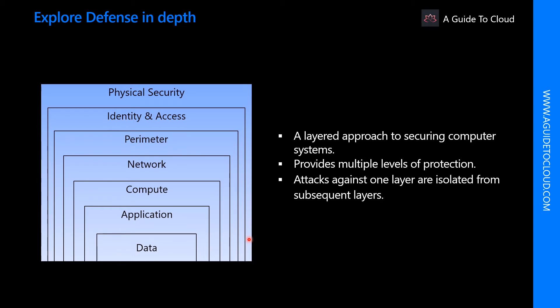Each layer provides protection so that if one layer is breached, a subsequent layer is already in place to prevent further exposure. This approach removes reliance on any single layer of protection and acts to slow down an attack, providing alert telemetry that can be acted upon either automatically or manually.